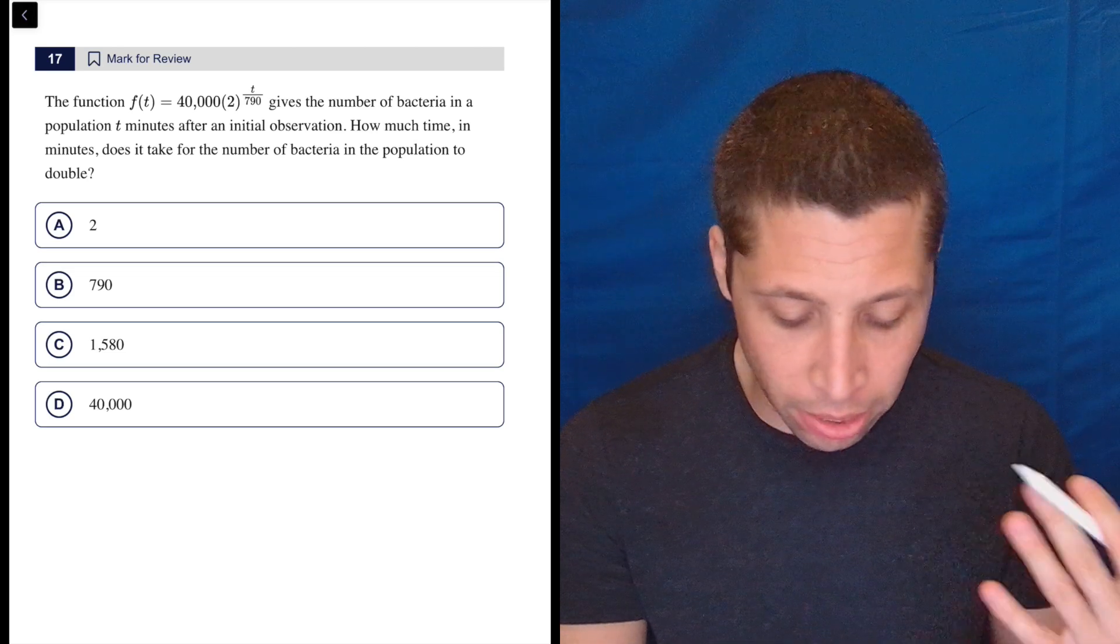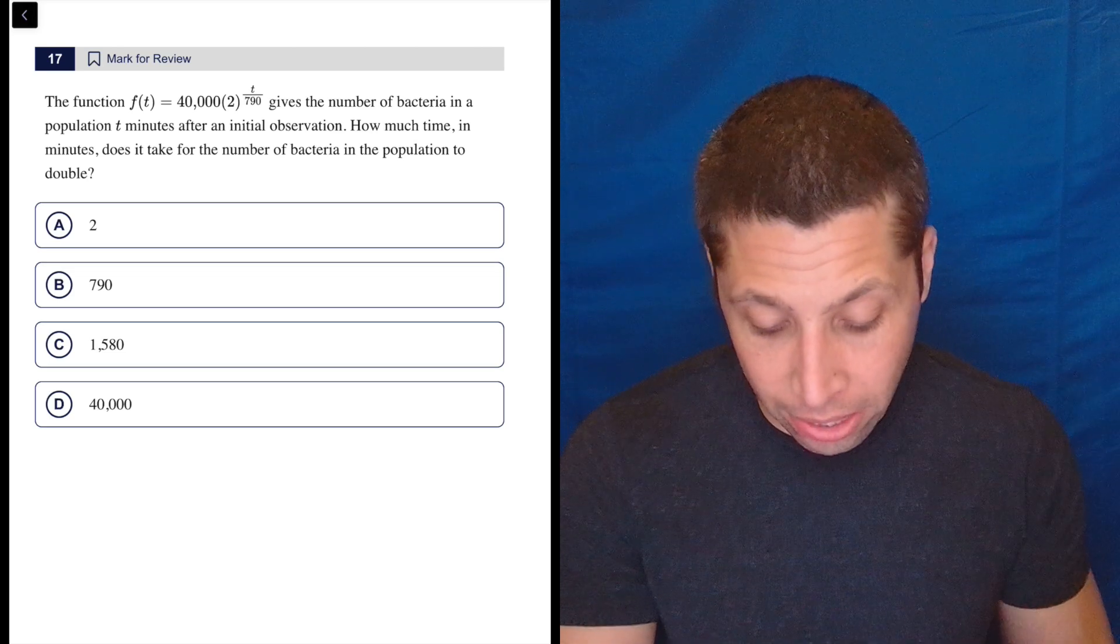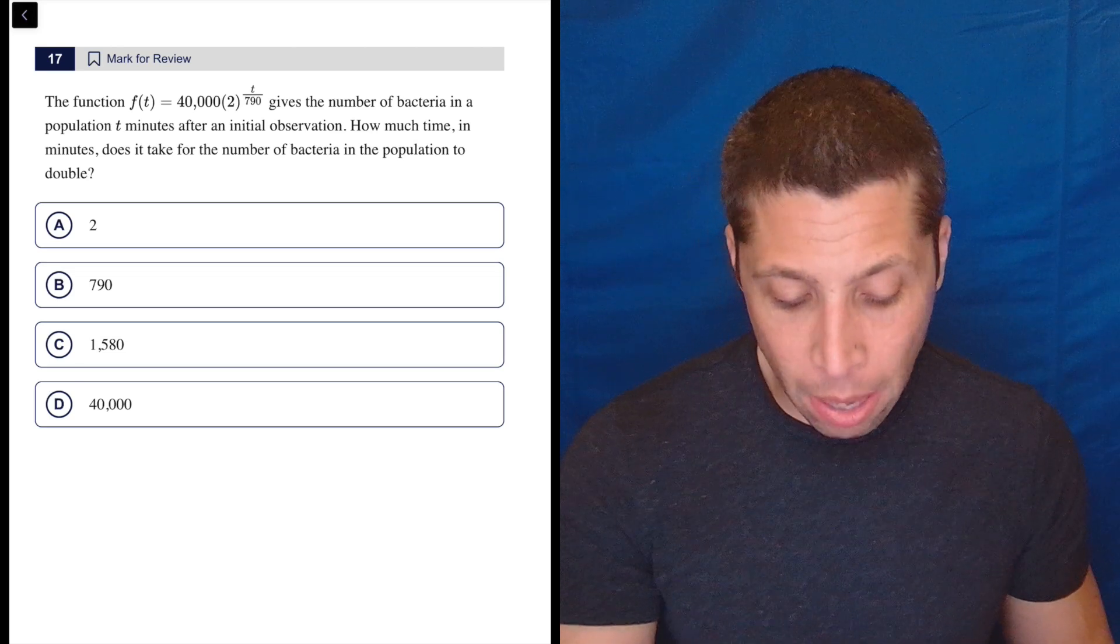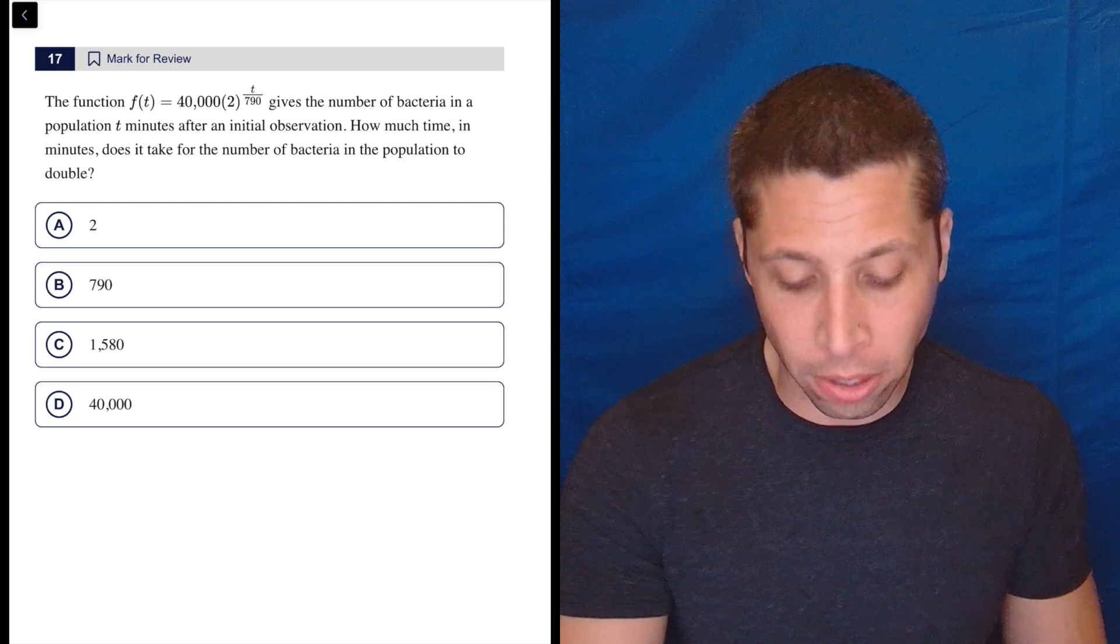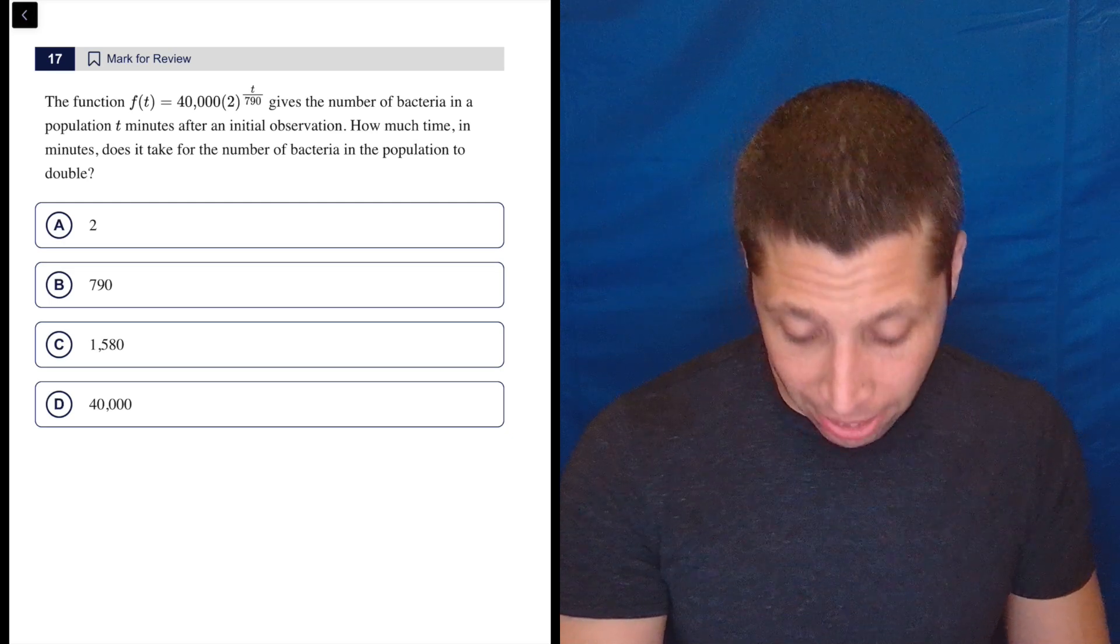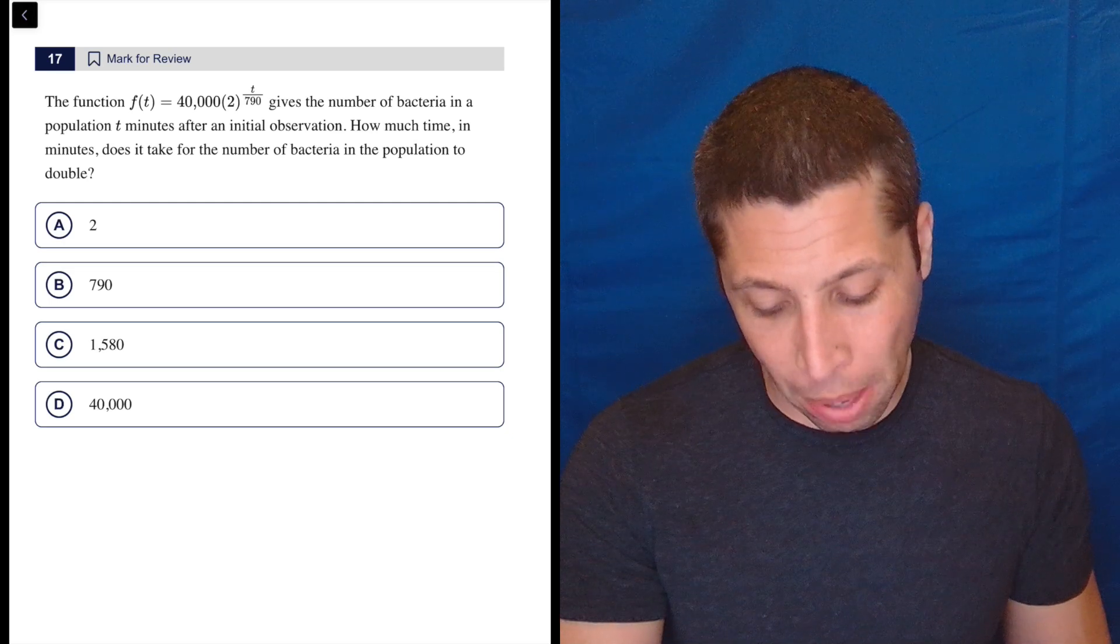So the function f(t) = 40,000 × 2^(t/790) gives the number of bacteria in a population t minutes after an initial observation. How much time in minutes does it take for the number of bacteria in the population to double?